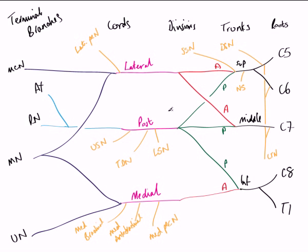In this video, we have looked at the brachial plexus and how it is formed from its roots C5 through to T1. It has formed the trunks, divisions, cords, and its terminal branches — the musculocutaneous, median, ulnar, radial, and axillary nerves — and some of the smaller nerves that also supply the skin and muscles of the upper limb and surrounding region.